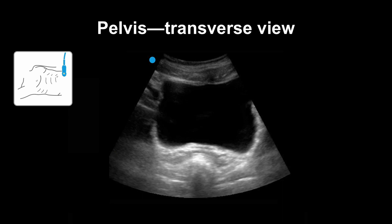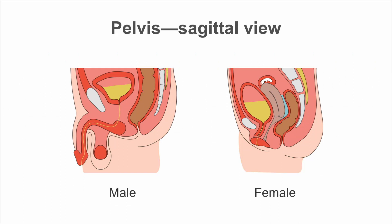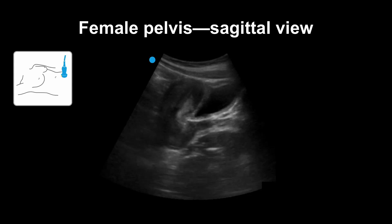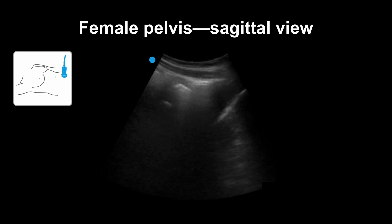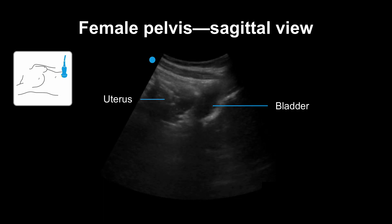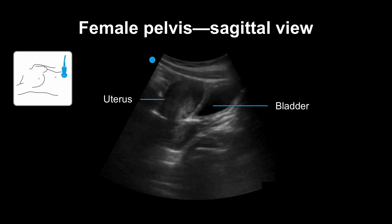On the other side of the screen correlates with the patient's left. This slide illustrates the cross-sectional anatomy in the body when the probe is placed in a sagittal plane in the pelvis. Here is the expected anatomy in sagittal plane for a male and female pelvis. You can appreciate the different structures that can be seen on ultrasound in the male and female pelvis, most notably the uterus in the female pelvis. Here's what a normal female sagittal pelvis looks like. You can see the uterus to the left side of the bladder. Because the probe indicator is pointing towards the patient's head, the structures closest to the dot will be more cephalad.